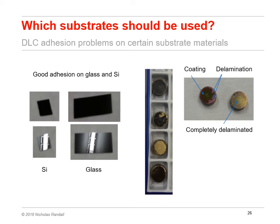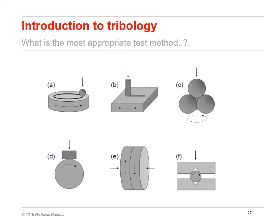The sessions on tribological testing will focus on the most common test methods. Here are a few examples: the ball on disc and pin on disc (A and B), the four ball wear tester geometry in C, the block on ring D, the plate on plate E, and the pin on V block in F. All of these will be covered in some detail.